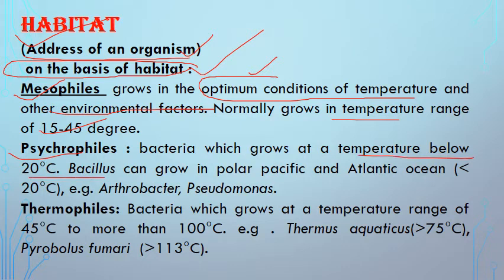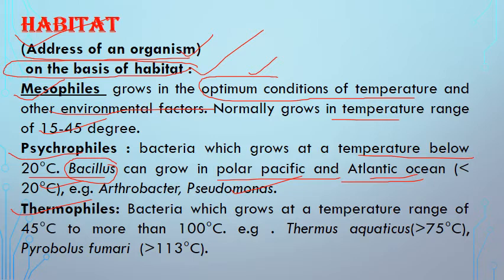Next are psychrophiles — 'psychro' means cold. Bacteria that grow at temperatures below 20 degrees Celsius are called psychrophiles. Examples include Bacillus species found in polar and Antarctic/Pacific ocean regions, as well as Arthrobacter and Pseudomonas. Next are thermophiles — bacteria that grow at temperatures greater than 45 degrees Celsius, up to 100 degrees Celsius. A famous example is Thermus aquaticus.